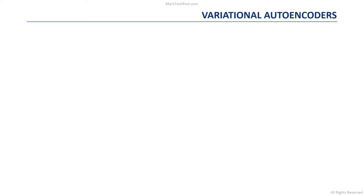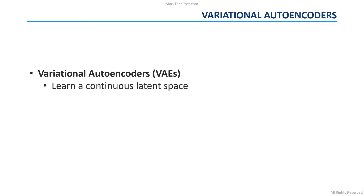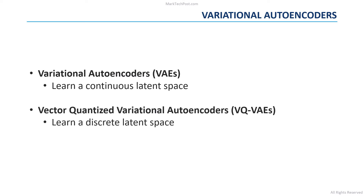The vector quantized variational autoencoder is used to compress raw audio to a lower dimensional space. Traditional variational autoencoders learn a continuous latent space, which is a very hard task to learn. On the other hand, vector quantized variational autoencoders work on a discrete latent space, making the optimization problem simpler.